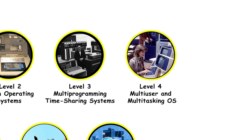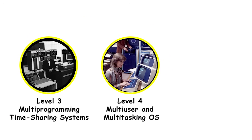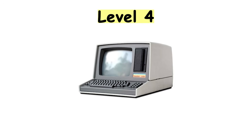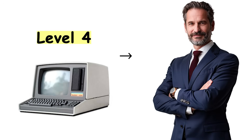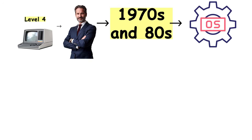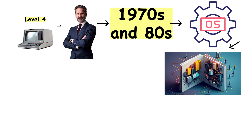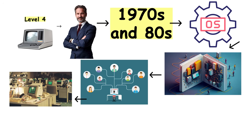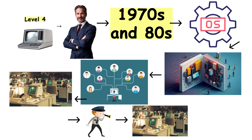Level 4: multi-user and multitasking operating systems — the professional era. By the 1970s and 80s, operating systems had to handle complex requirements: many users logged in simultaneously, each running multiple programs, all with strong security boundaries. No user should be able to crash another user's program or access their files. The operating system became the referee ensuring everyone played fair.